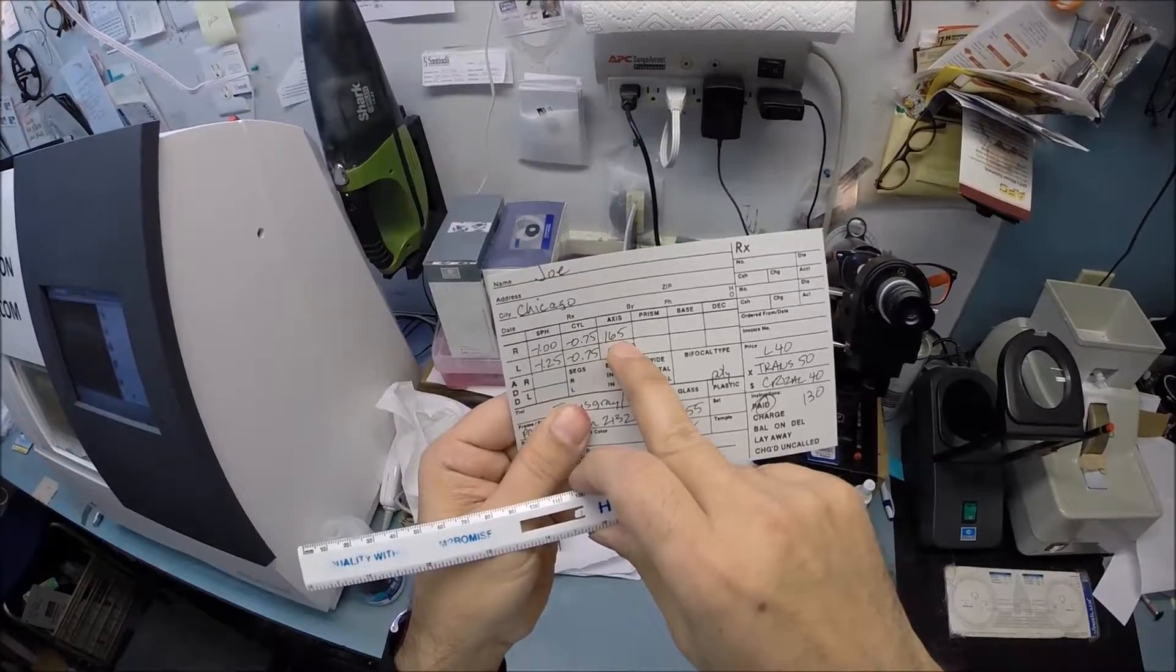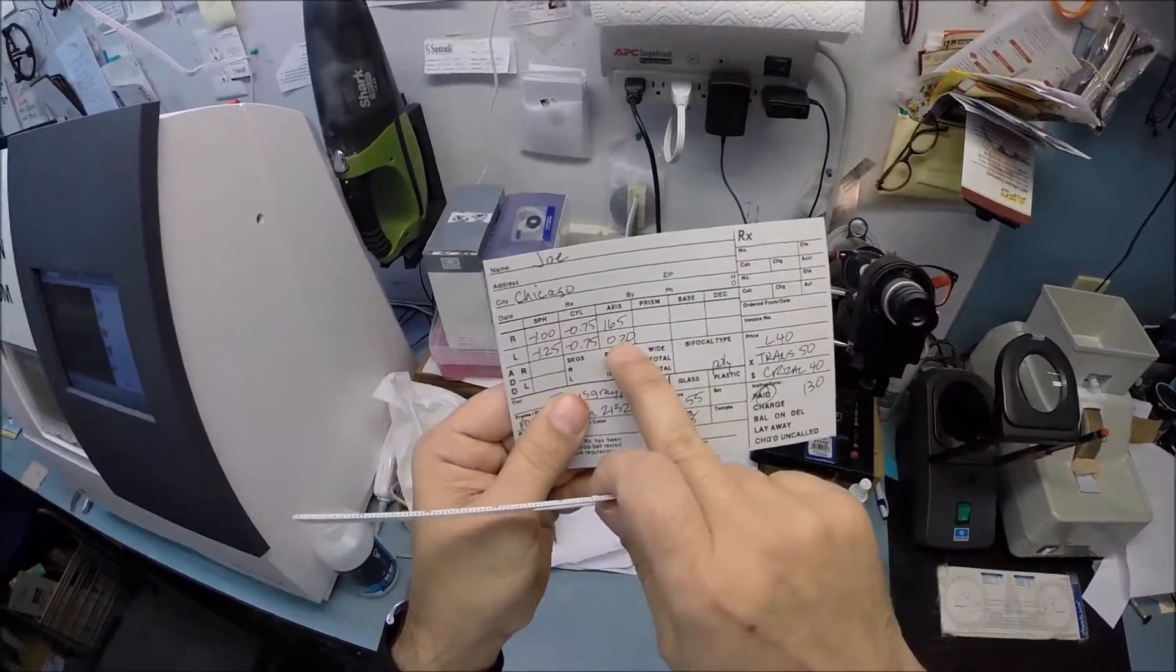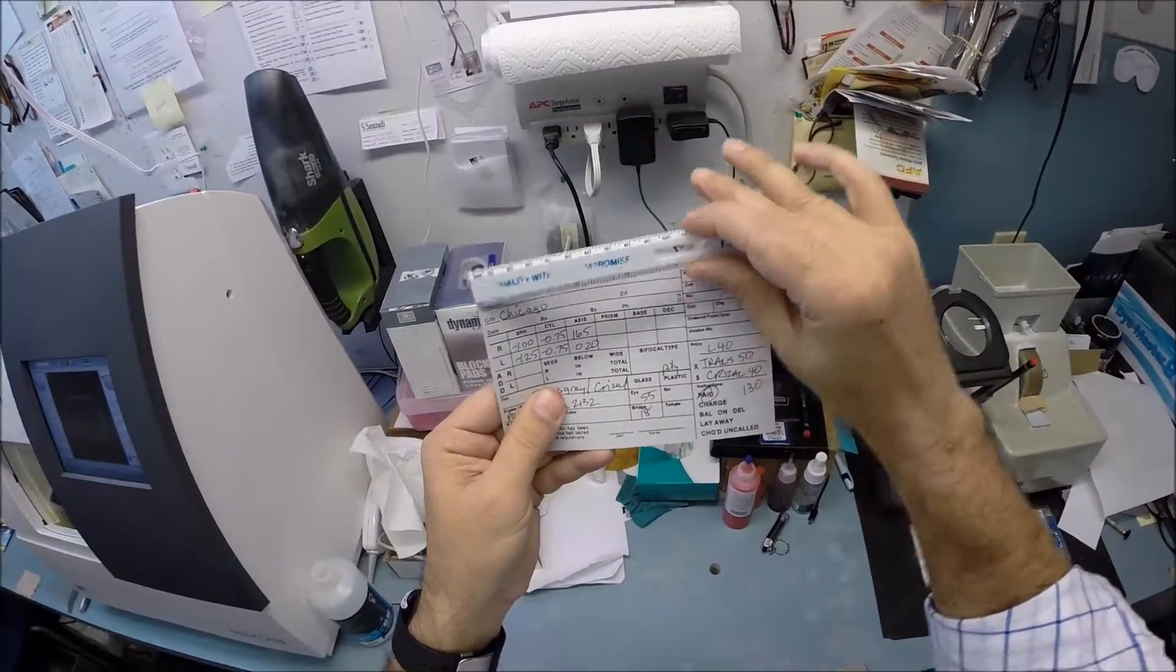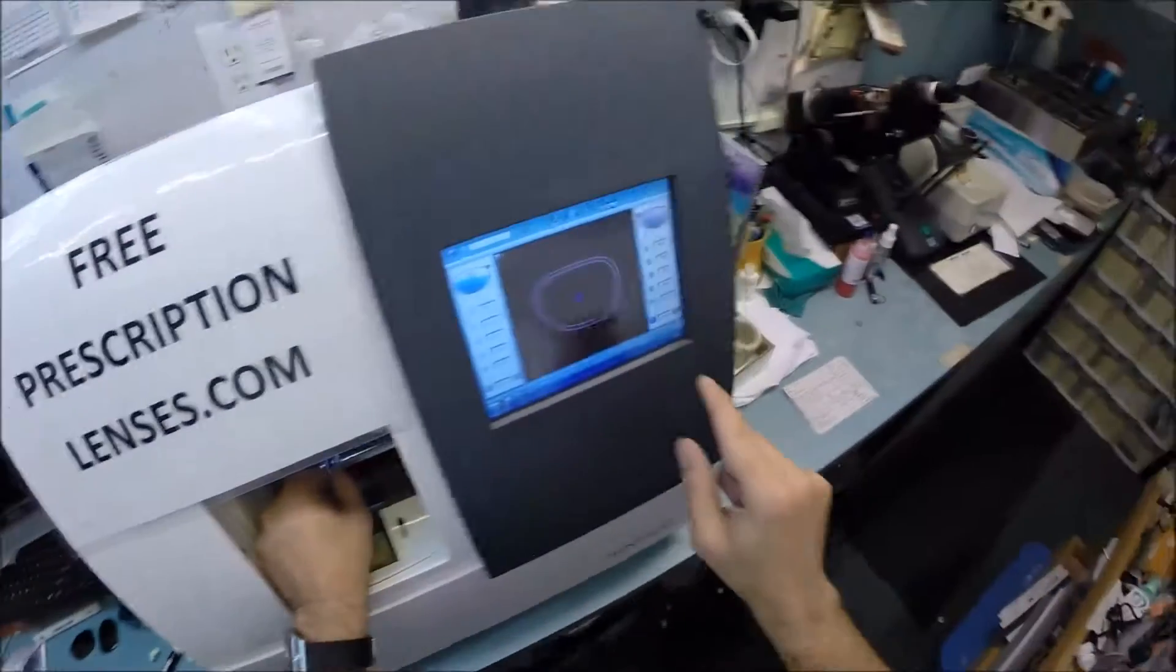165 is 15 degrees away from the 180 line. 20 is 20 degrees away from the 180. So really you're only 15 to 20 degrees away from this line, and that's what those numbers mean.